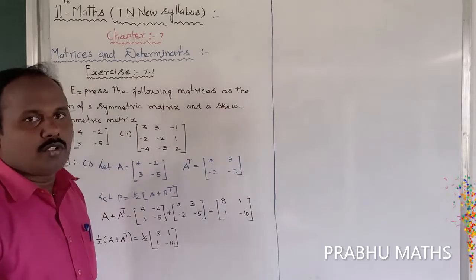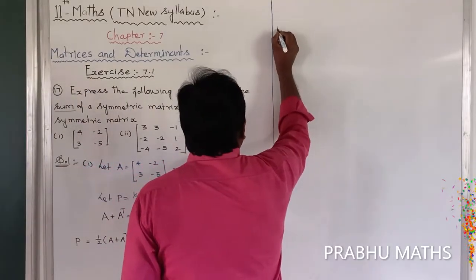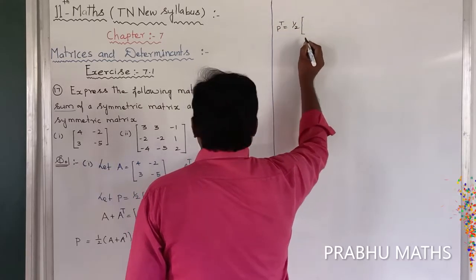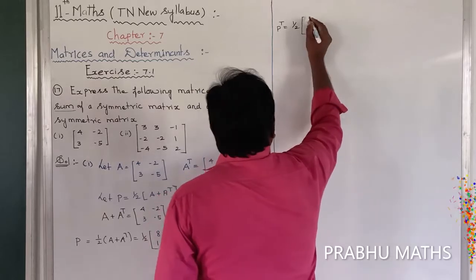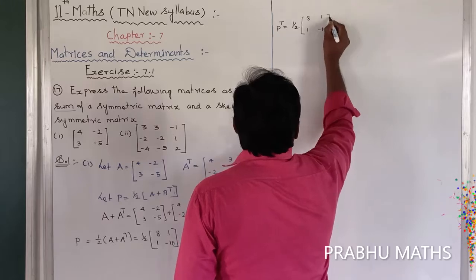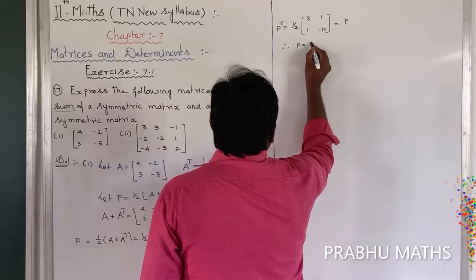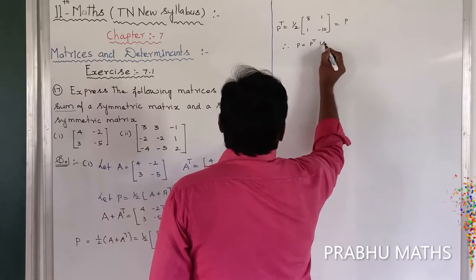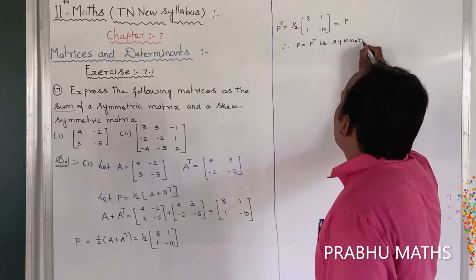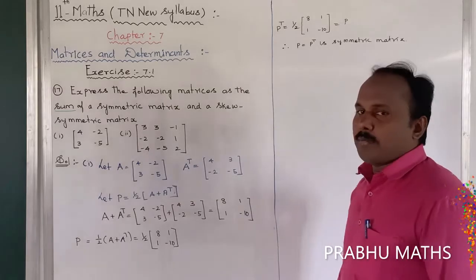Symmetric means P is equal to P transpose. So P transpose is equal to 1/2 into [[8, 1], [1, -10]], which equals P. Therefore P is equal to P transpose — this is a fully symmetric matrix. The first part is completed.